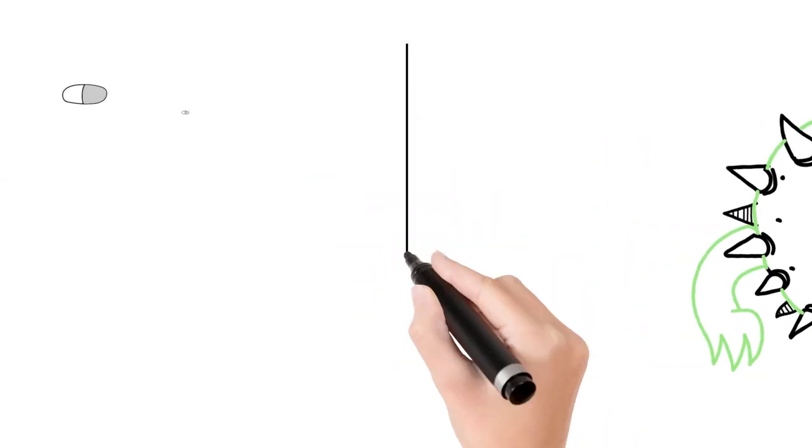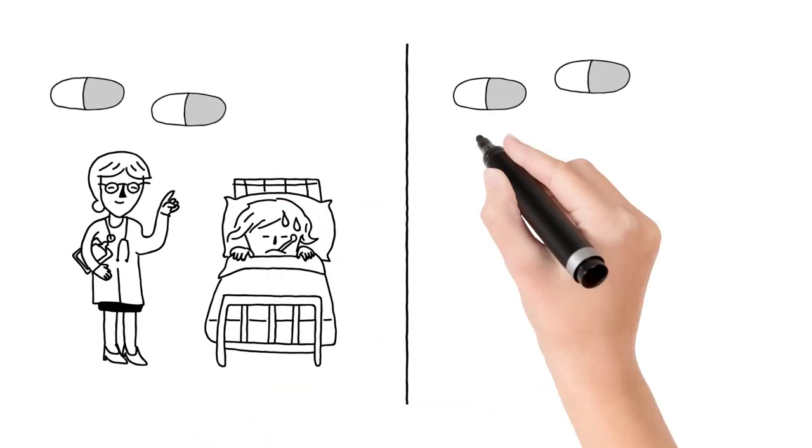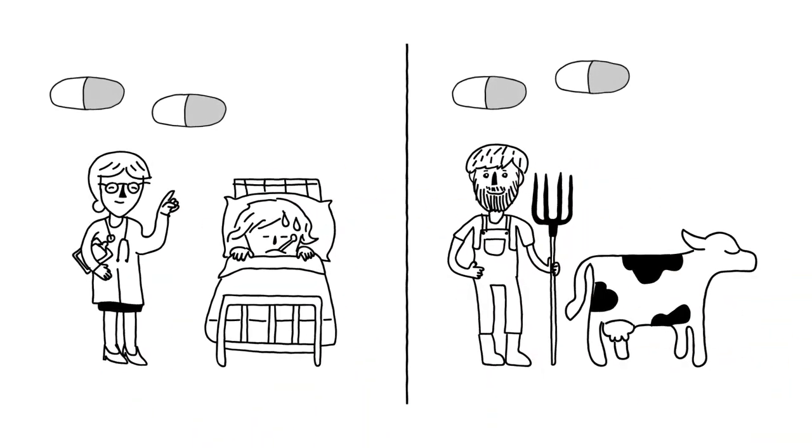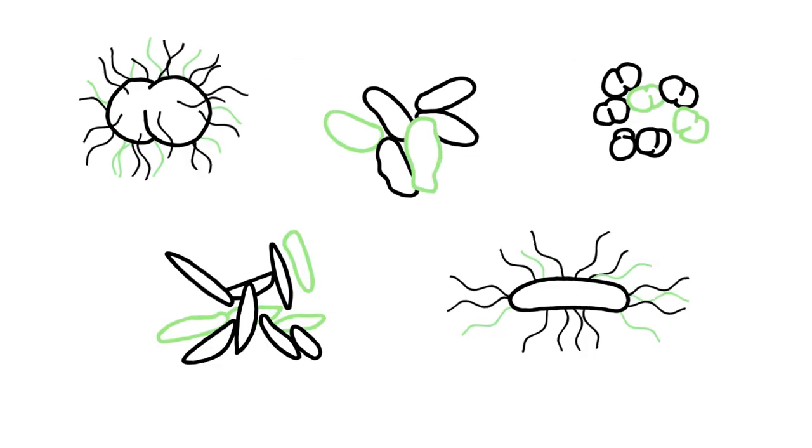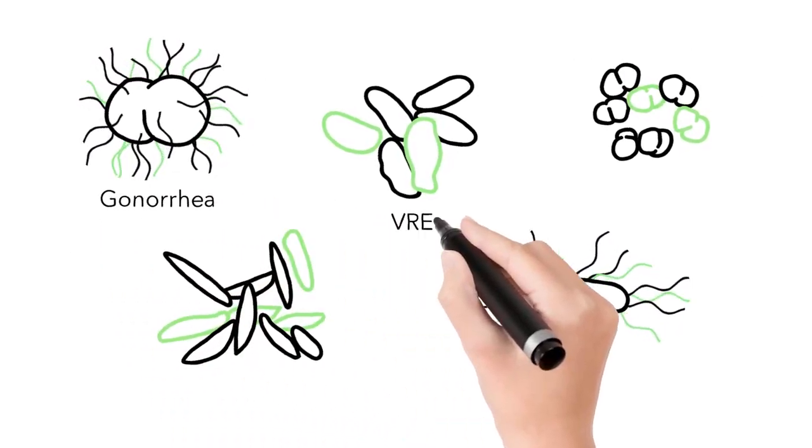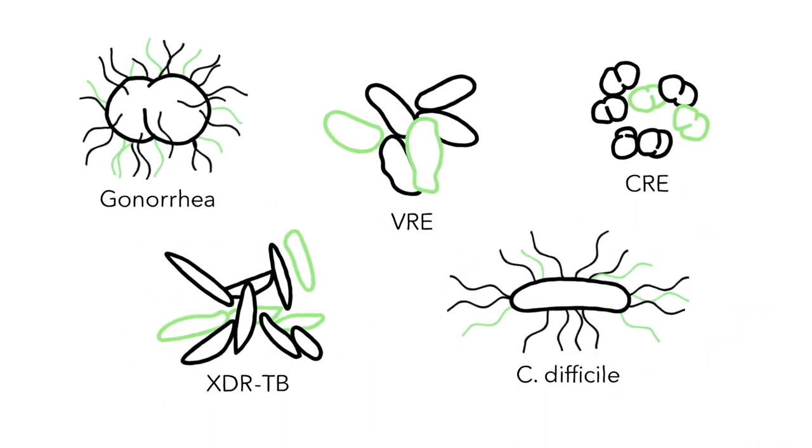Worse, the overuse and inappropriate use of antibiotics in healthcare and agriculture is driving the spread of drug resistance. Without effective antibiotics, common infections may once again become untreatable and deadly.